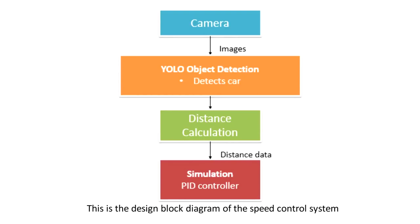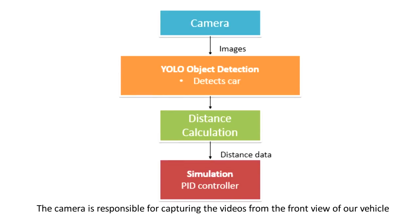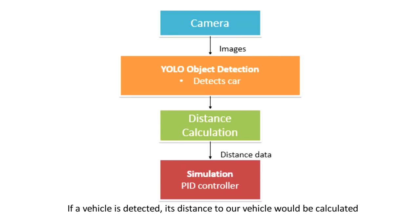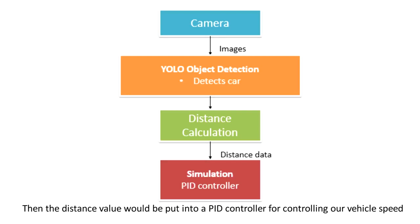This is the design block diagram of the speed control system. The camera is responsible for capturing the video from the front view of our vehicle. The video is passed into the YOLO object detection program for vehicle detection. If a vehicle is detected, its distance to our vehicle will be calculated, and the distance value will be put into a PID controller for controlling our vehicle speed.